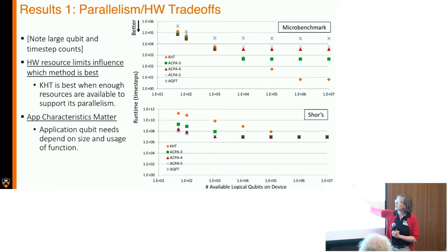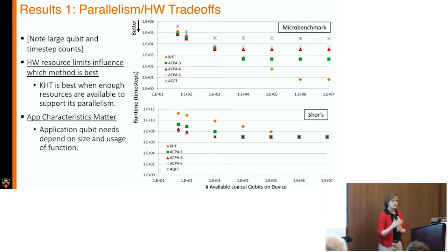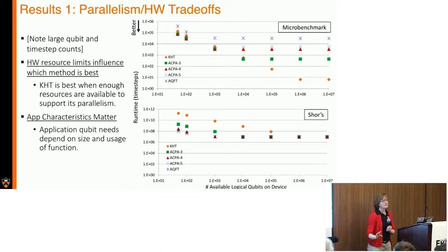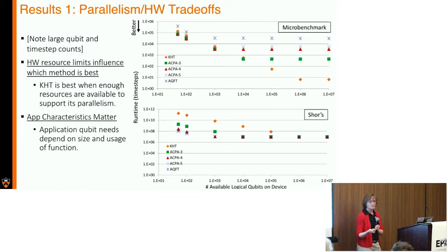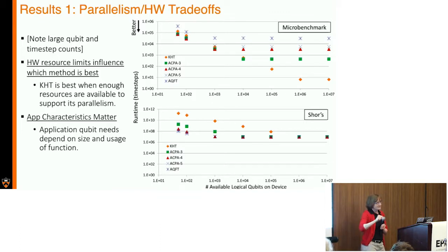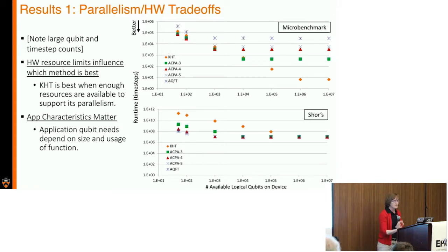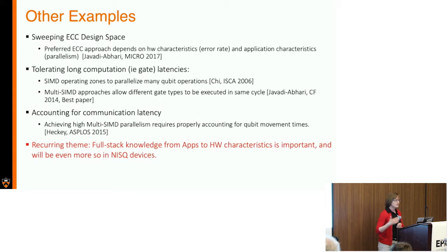Where we are on the qubit count axis determines which of these approaches is best. I don't expect you to understand quantum phase estimation in detail right now, but the key takeaway is: depending on hardware resources—i.e., the number of qubits—and on application characteristics—i.e., which algorithm you're running—the right answer varied. That's one example showing we need full-stack ability to push information up and down in order to find really good optimal techniques, and we've done several other such examples in recent research.